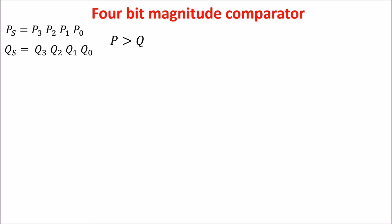If P3 is greater than Q3, then the number P is greater than Q and we don't need to check anything else. For example, if P3 is 1 and Q3 is 0, then PS is greater than QS, even if all the other bits of QS are at 1 and the other bits of PS are at 0.